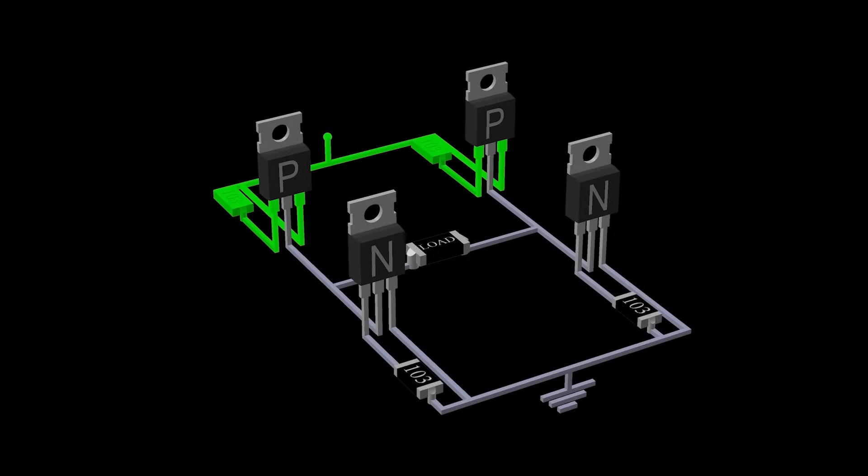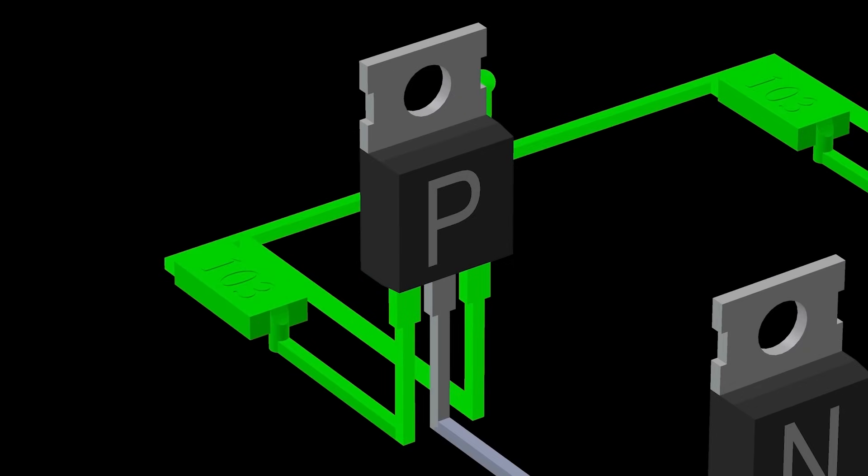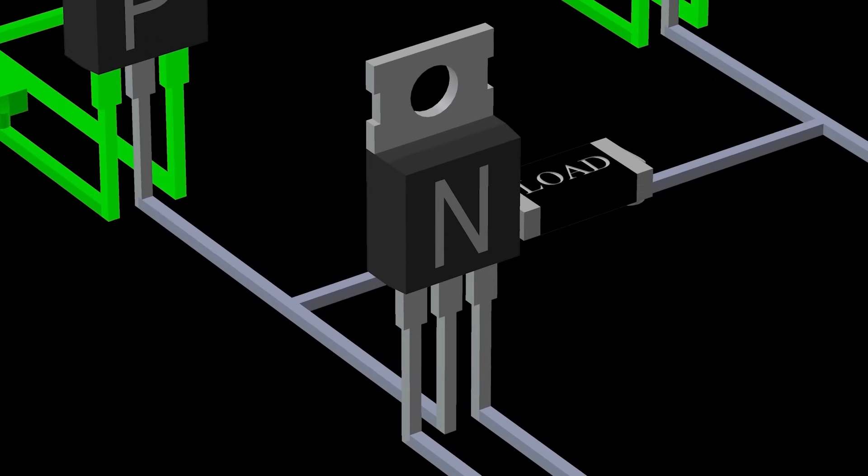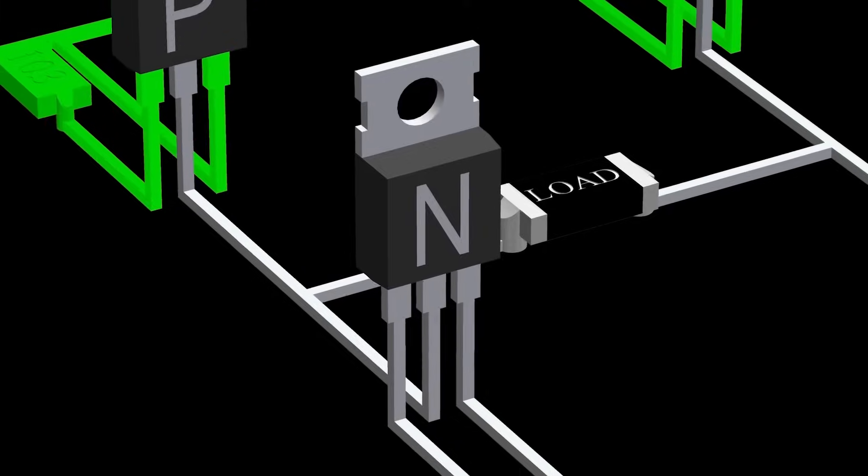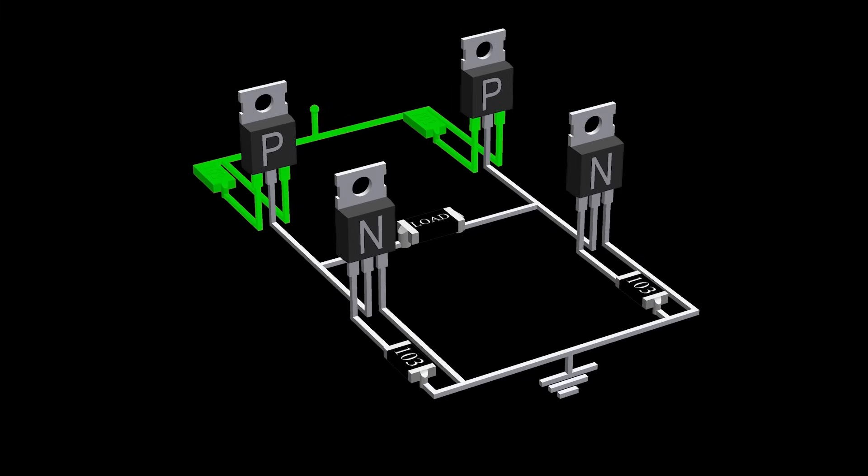Now, let's use MOSFETs as the switches. For high side switching, we use P channel MOSFETs, and for low side switching, we use N channel MOSFETs. Also, we add 10k pull up and pull down resistors to the MOSFET gates, so they normally stay off.